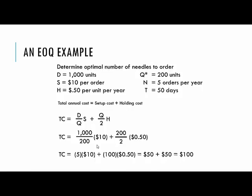Is it always true that holding cost and setup cost will be equal? For the EOQ model, yes — because we set the two equal to each other to find Q*. So they must be equal. If you get different numbers for setup cost versus holding cost in your total cost calculation, then you've done something wrong.